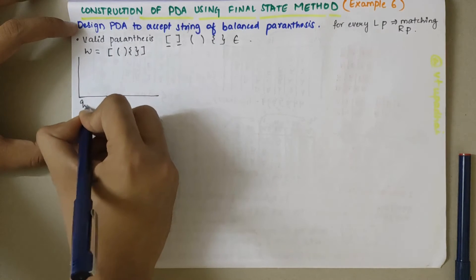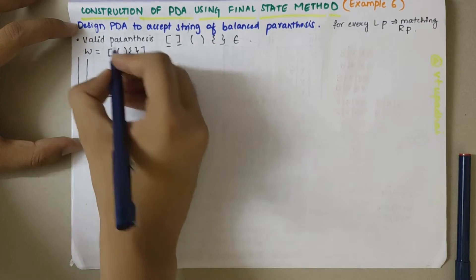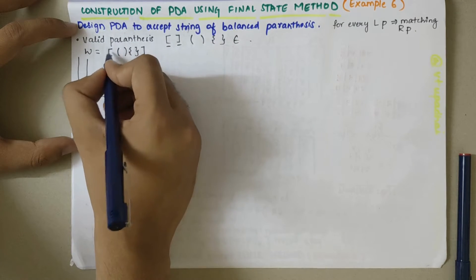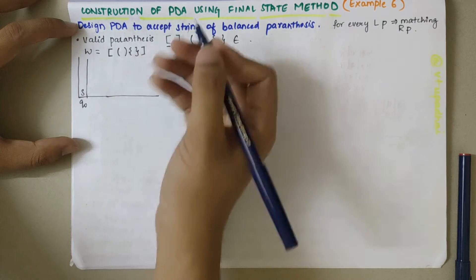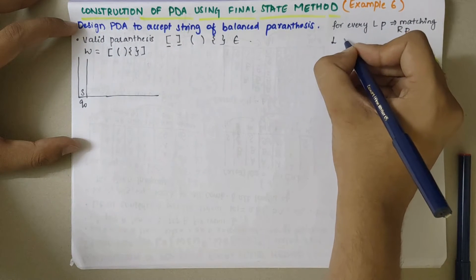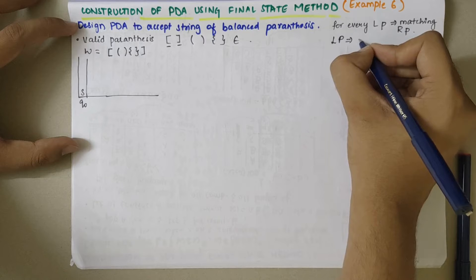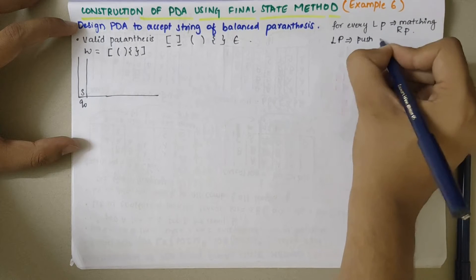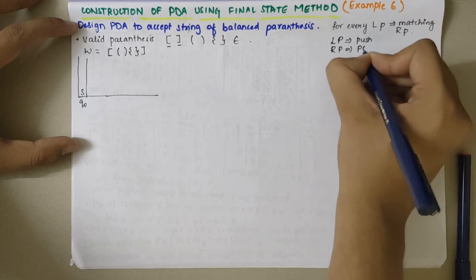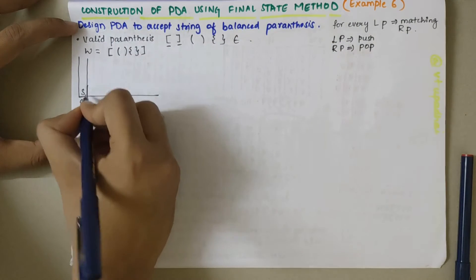Initially the stack was empty and we were in state Q0. When a left square bracket is encountered, we need to push it onto the stack. When a right parenthesis is encountered, we need to pop from the stack.